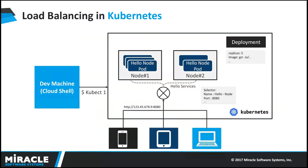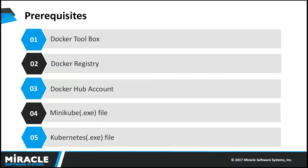For load balancing in Kubernetes: suppose we have an application running on three different nodes and any application goes down on one of the nodes — Kubernetes is used to load balance the application among the pods. The three prerequisites needed for this task are Docker Toolbox, Docker Registry with a Docker Hub account, minikube.exe, and kubectl.exe files.